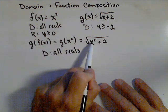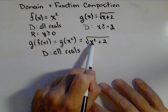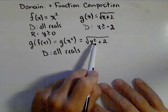We can also see it by checking the function. Since x will always be positive, adding two, we're still gonna be able to take its square root.